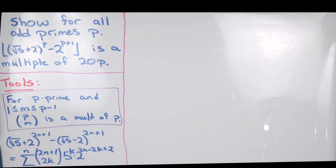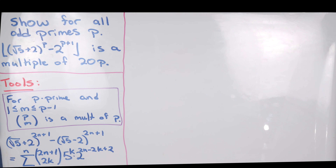We will prove our next tool, which says that if we take the square root of 5 plus 2 to the 2n plus 1 minus the square root of 5 minus 2 to the 2n plus 1 — notice those are odd exponents — we get the sum as k goes from 0 to n of the binomial coefficient 2n plus 1 choose 2k, times 5 to the k times 2 to the power 2n minus 2k plus 2, and that is definitely an integer.